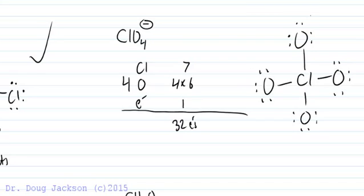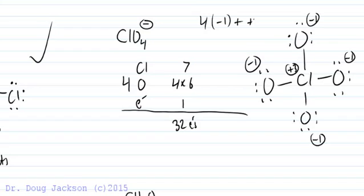Now we have to put formal charge in. Each oxygen, if you do the calculation, has a negative one formal charge. Six minus one bond is five minus six dots is negative one. Chlorine likes to have seven valence. So seven minus four bonds is plus three. Plus three minus four is negative one. So the total charge, there are four negative ones and a positive three. That's a total of negative one. So we have balanced out here and we are good.